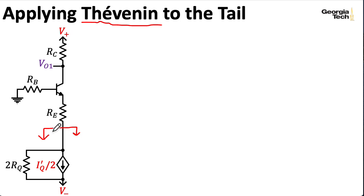To do that, remember that when we compute a Thevenin equivalent, we cut the connection here, so there's no current flowing. So the current IQ prime over two that's flowing here through the source, it's flowing here, and it means it's flowing up through this resistance of 2RQ.